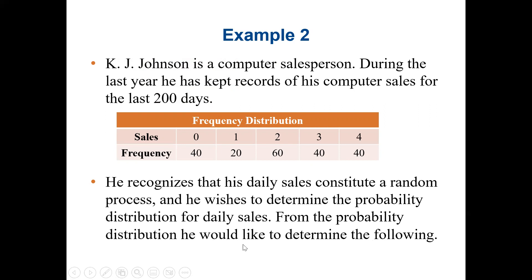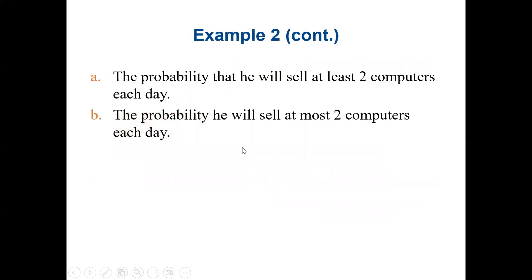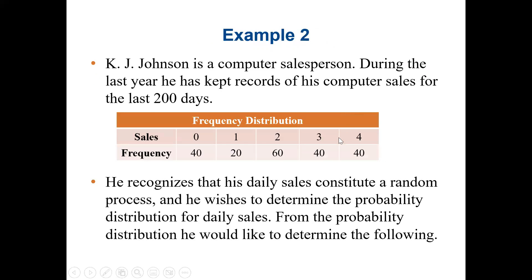From the probability distribution, he would like to determine: first, the probability that he will sell at least two computers each day; and second, the probability that he will sell at most two computers. For at least two computers, we look at sales of two, three, or four. For at most two computers, we look at zero, one, or two.